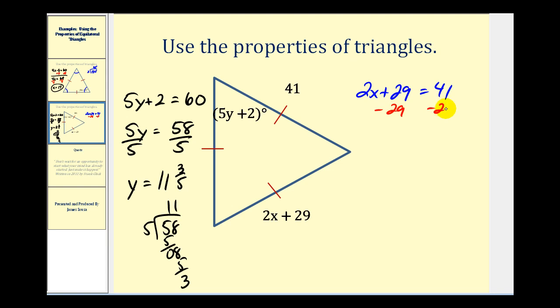We'll subtract 29 on both sides. So we'll have 2x on the left. 41 minus 29, that's going to give us 12. Divide both sides by 2. So x equals 6. So we had x equals 6 and y equals 11 and three-fifths. I hope you found these examples helpful.